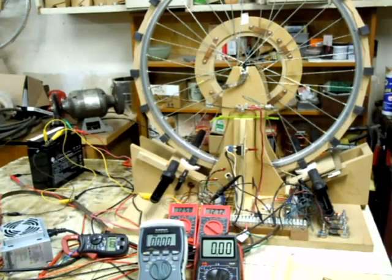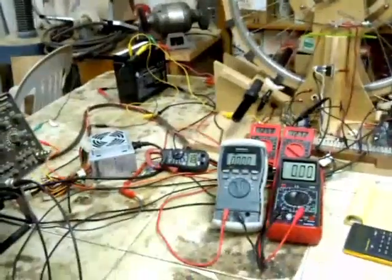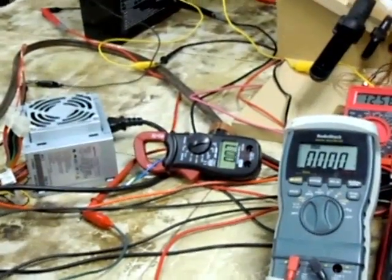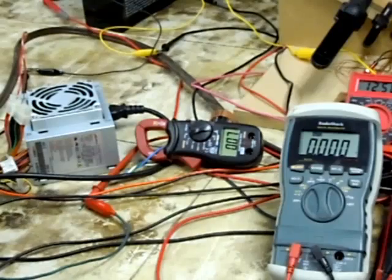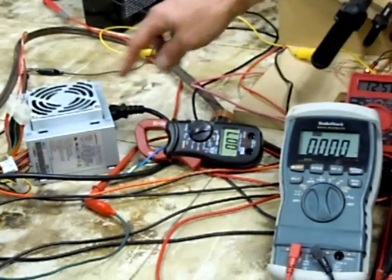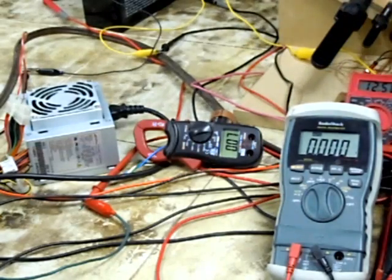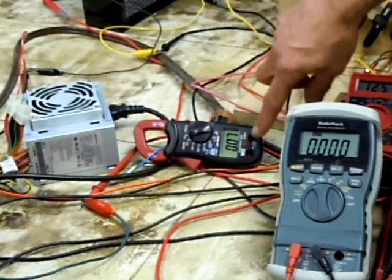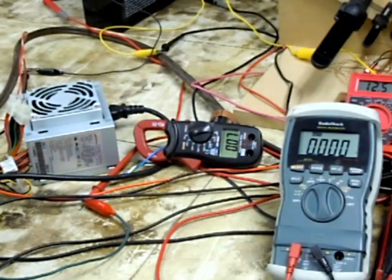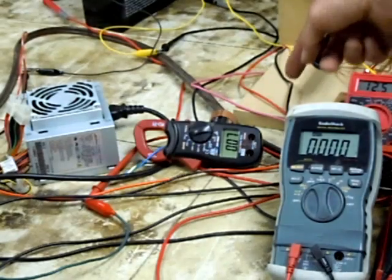Before I fire this up, I really want to make this point. That little meter there is the clamp on meter on the AC side of this power supply, showing the amp draw of that thing, which is 0.07 amps just to make the PC supply run with the fan and everything. Pay attention to that.